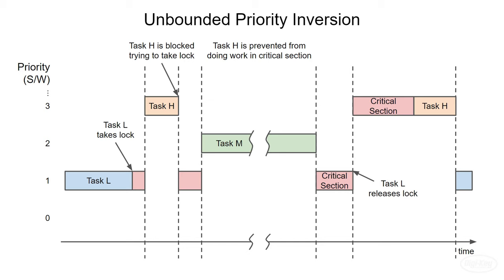On the Pathfinder lander, a watchdog timer was set to reset the entire system if the high-priority task had not been run for a certain period of time. This was a fail-safe mechanism. The designers thought the information bus task would never be blocked for too long, and if it was, something had gone catastrophically wrong. Unfortunately, the watchdog timer would reset the system because this unbounded priority inversion issue would plague the system once every few days.